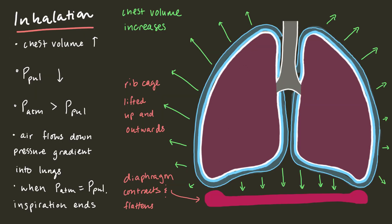When we breathe in, our diaphragm contracts from its dome shape into a flatter shape and moves downwards. The muscles in between our ribs also contract and lift the entire ribcage upwards and outwards. These muscle contractions are enough to increase the chest volume by almost half a liter. The rise in chest volume causes a decrease in intrapulmonary pressure. Suddenly, atmospheric pressure is greater than the intrapulmonary pressure and air, like any other fluid, will flow from high to low pressure, so air flows into the lungs. Inspiration ends when these pressures equalize.